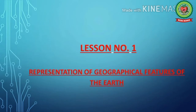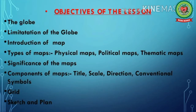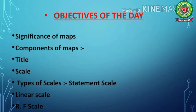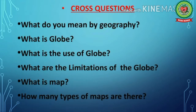In this chapter, we have already discussed the Meaning of Globe, Limitation of the Globe, Introduction of Map, and Types of Maps — including Physical Maps, Political Maps, and Thematic Maps. Today we will discuss Significance of Maps and Components of Maps, covering Title and Scale, then Types of Scales: Statement Scale, Linear Scale, and RF Scale. But before we proceed, let's recall the cross-questions related to the last video.